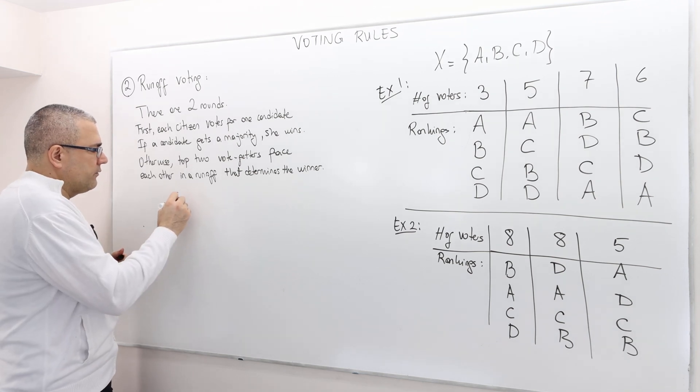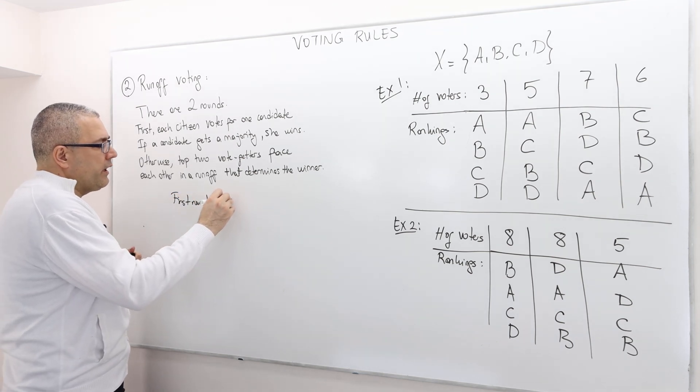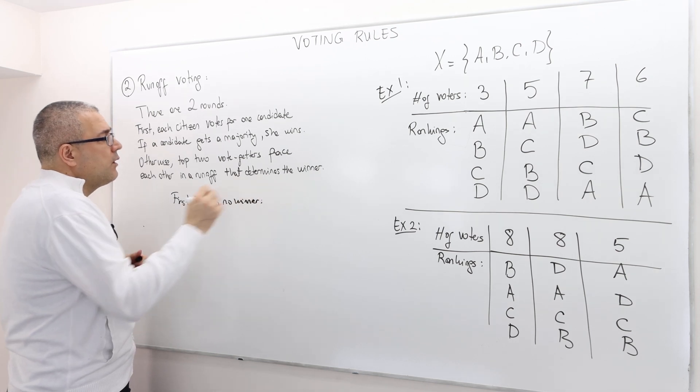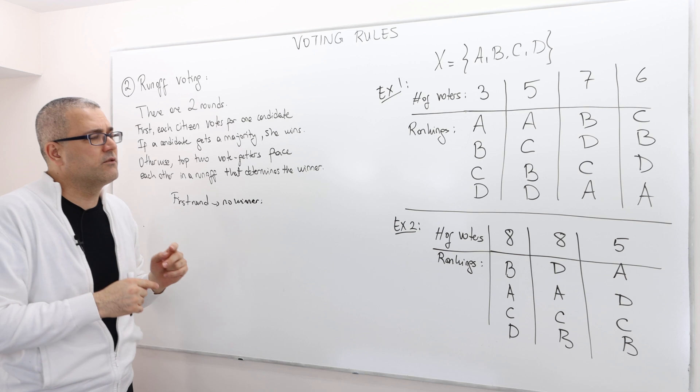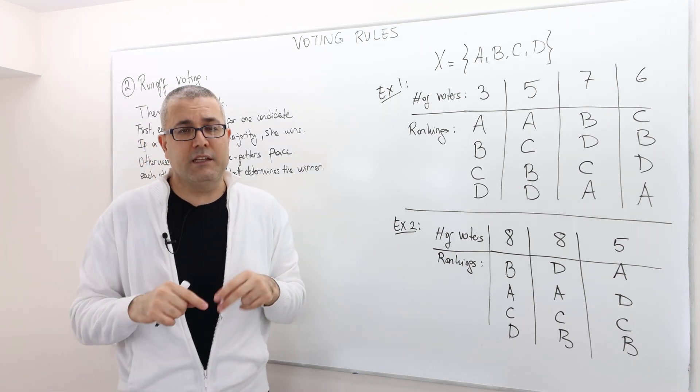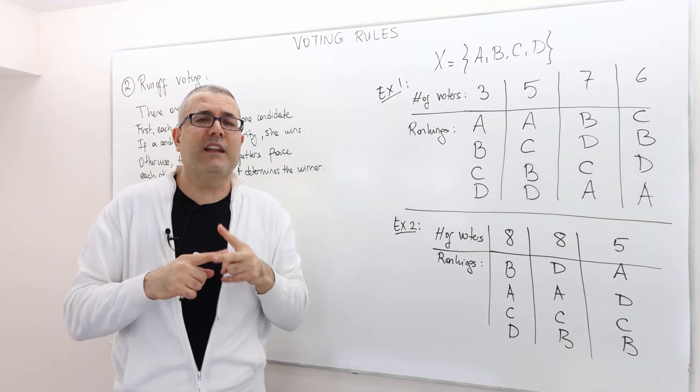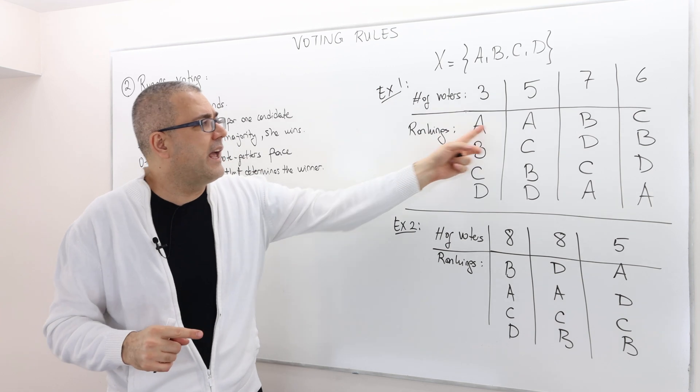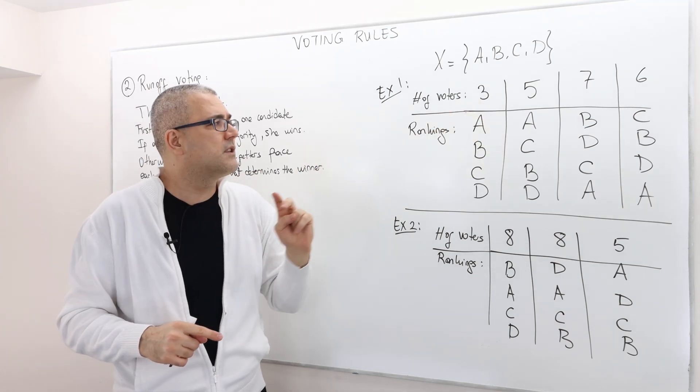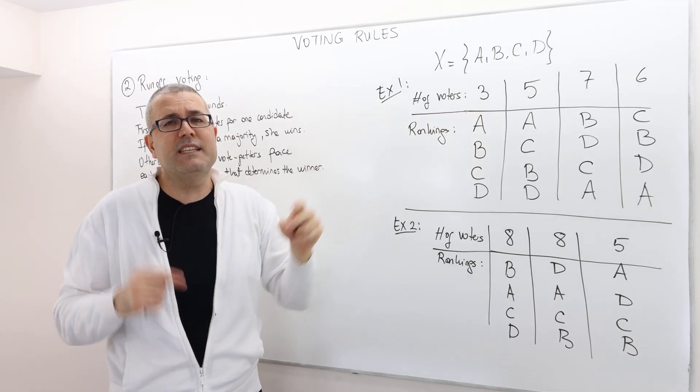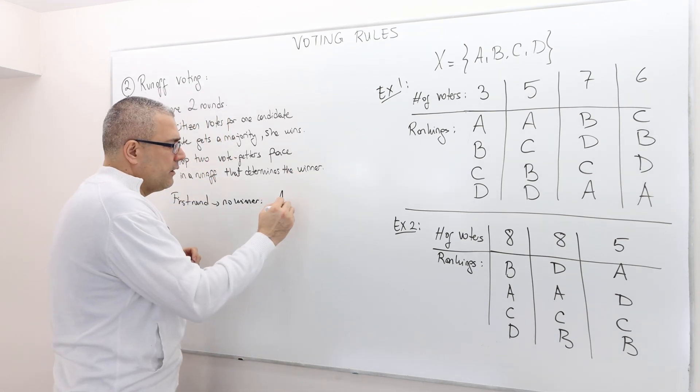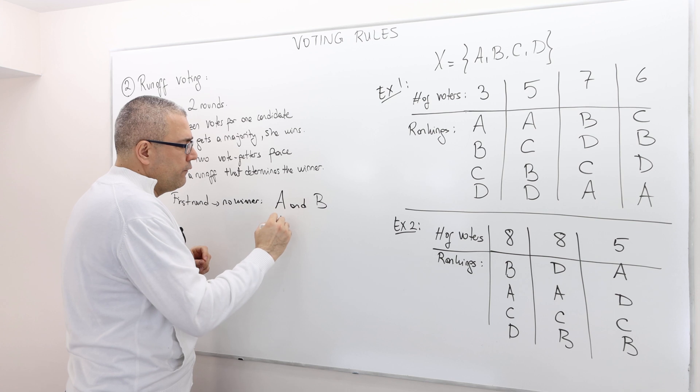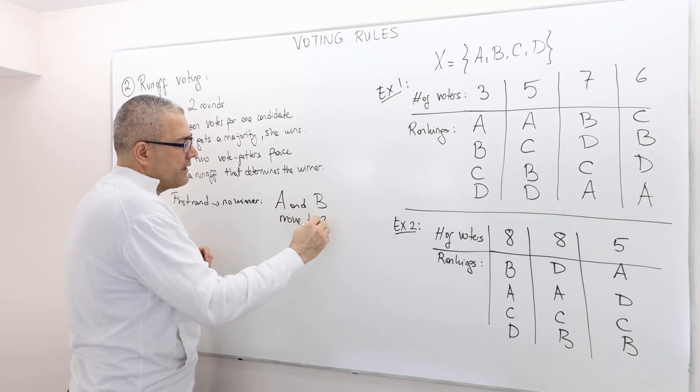So the first round, no winner. However, only two candidates are going to move to the second round. Which two candidates? The two candidates who get the most votes. A gets total of eight votes, B seven, C six, D zero. So therefore, only A and B are going to move to the second round.